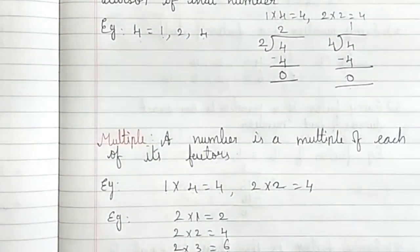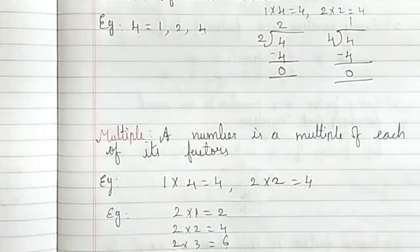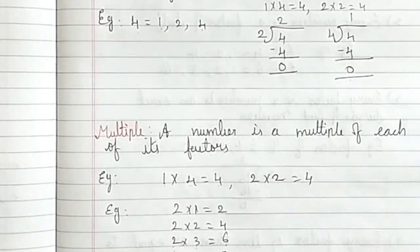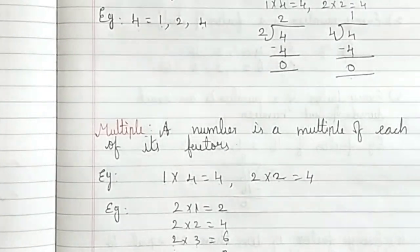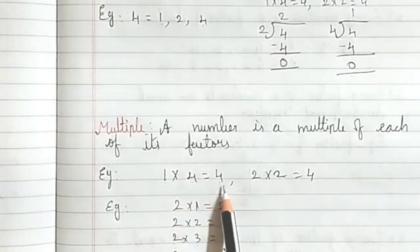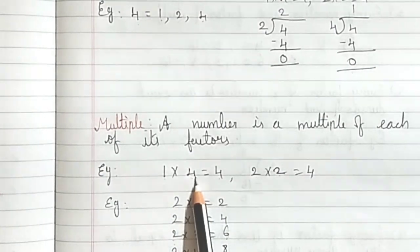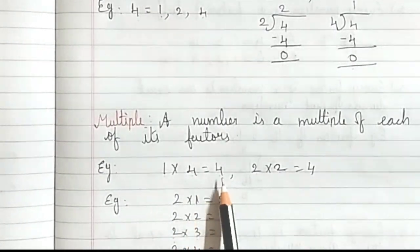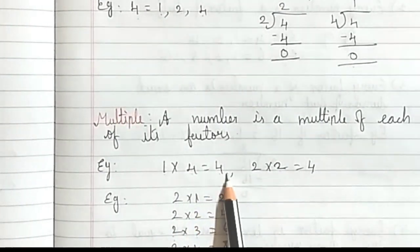Multiple: A multiple of a number is a product of each of its factors. When we multiply the factors we will get the multiple. For example, 4 ones are 4, 2 twos are 4. So 1 and 4 are factors, 2 and 2 are factors, and 4 is the multiple.